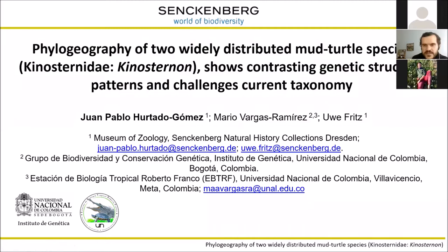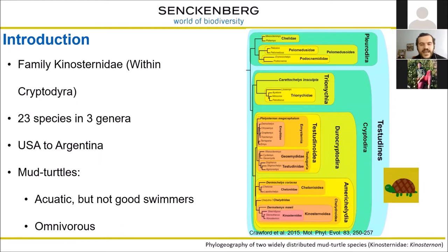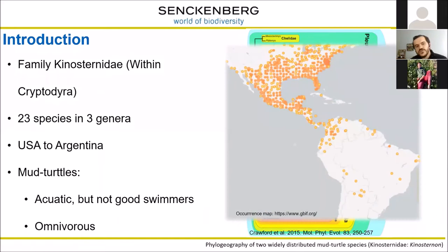The family Kinosternidae lies within Cryptodira — turtles that can hide their neck inside their shell. It includes 23 species in three genera and they are distributed from the United States to Argentina. They are called mud turtles. They have aquatic habitat and can live in rivers, ponds, and lakes, but they are surprisingly not that good at swimming.